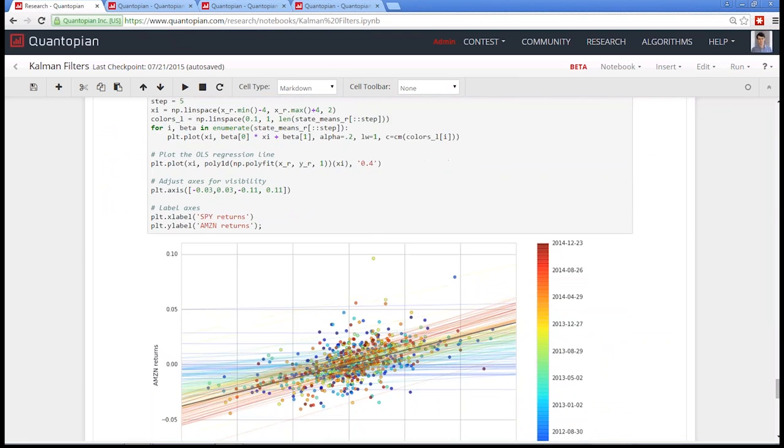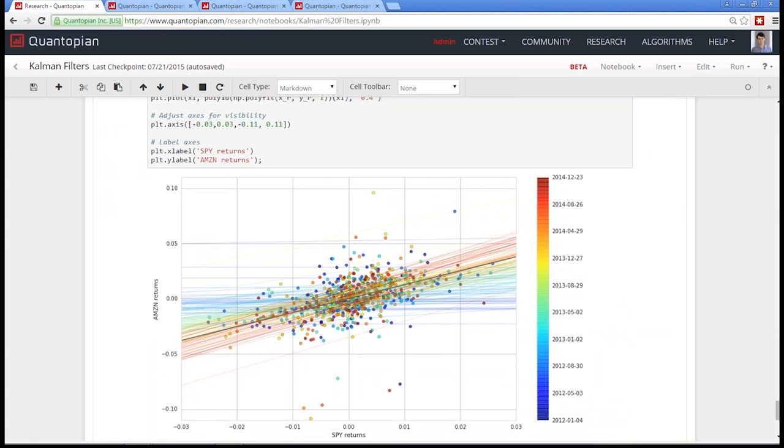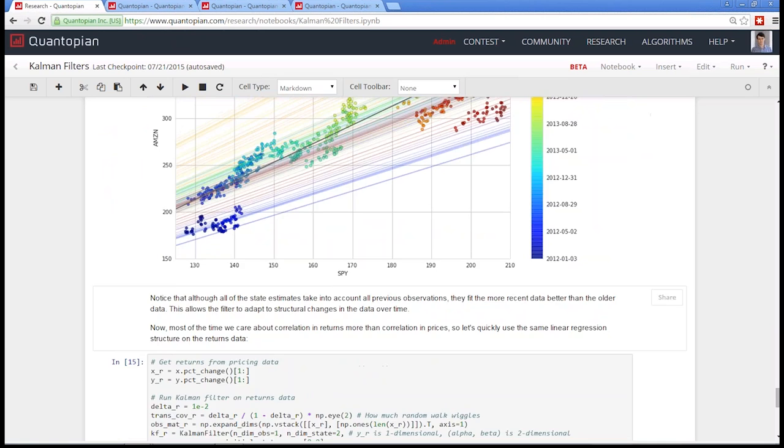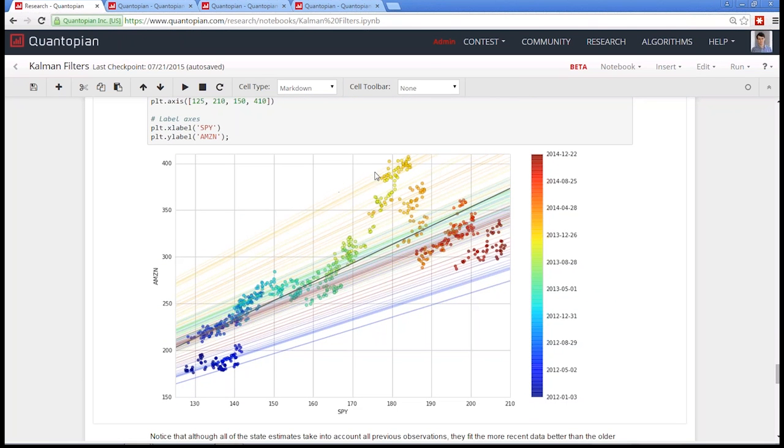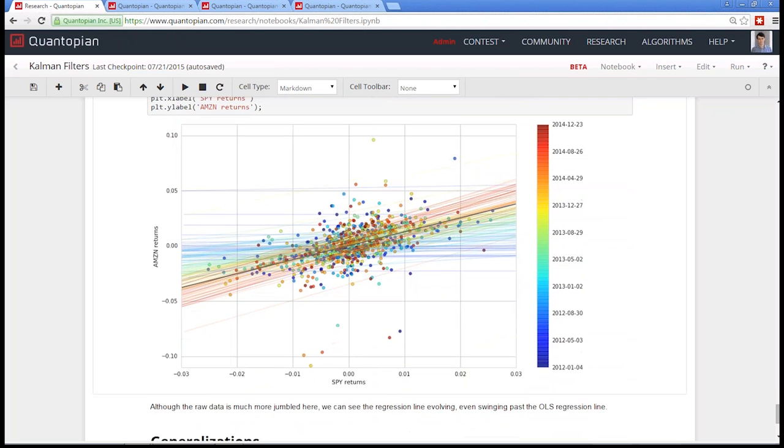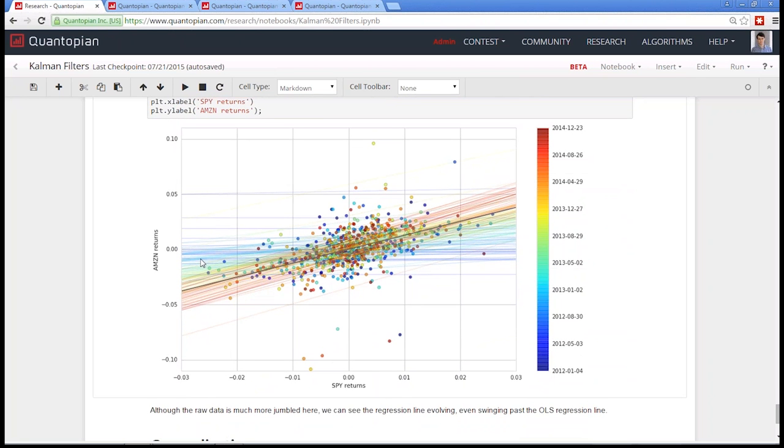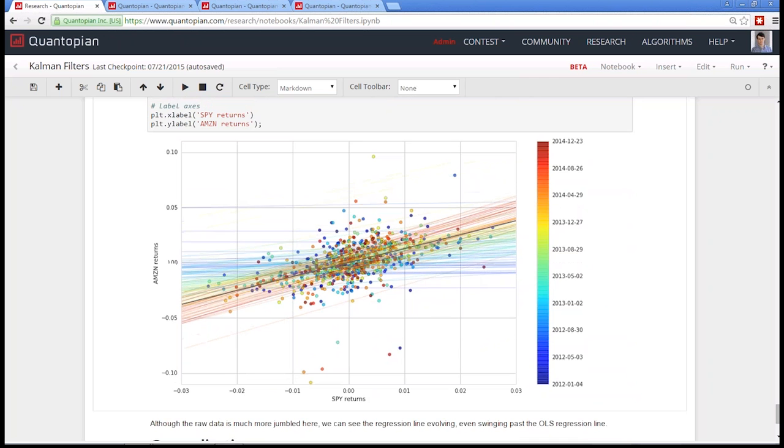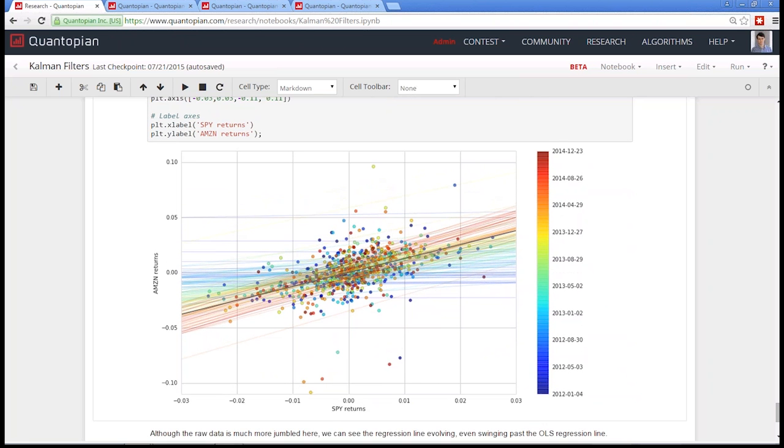And then finally here, this is just the same thing, but looking at returns, which is what you'd actually use to compute beta. And this would be more useful for doing something like a co-integration for a pairs trading strategy is when you'd linear regress on prices. But you can see here that, again, the Kalman filter is adjusting the slope of the line as time goes along. And you can see kind of the general trend is that it seems like the slope is getting more positive as time goes along, which means it's more and more related to the market returns, which makes sense. It's becoming more of an established company. It's a bigger part of the market.